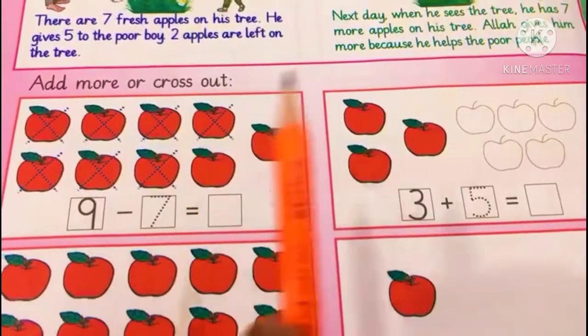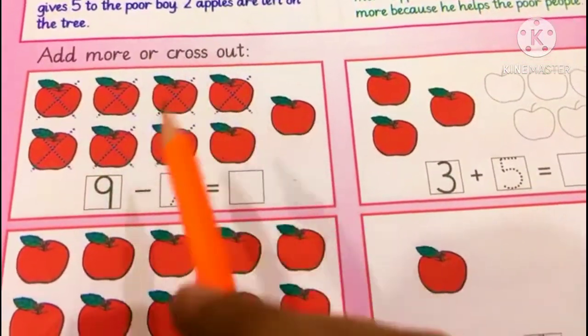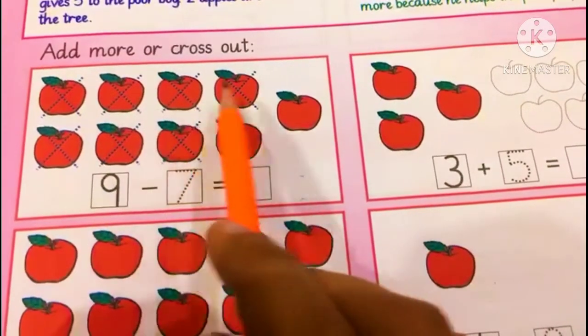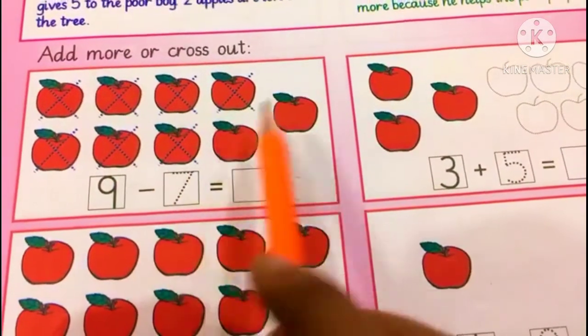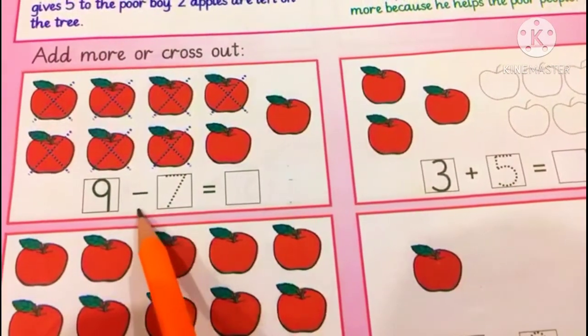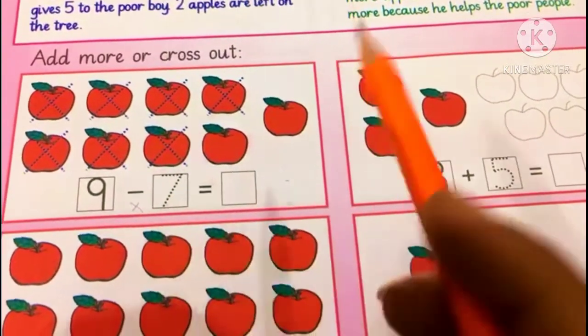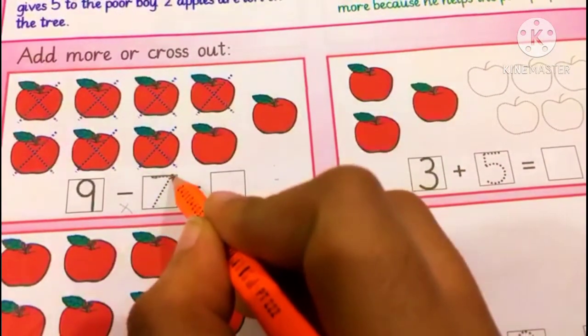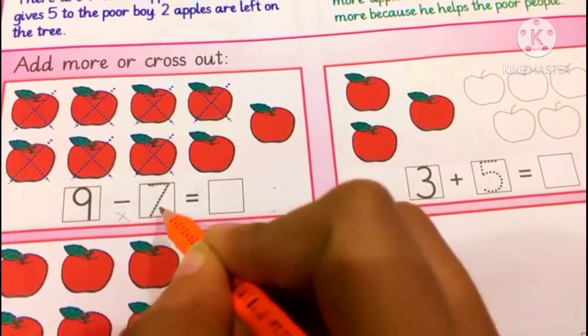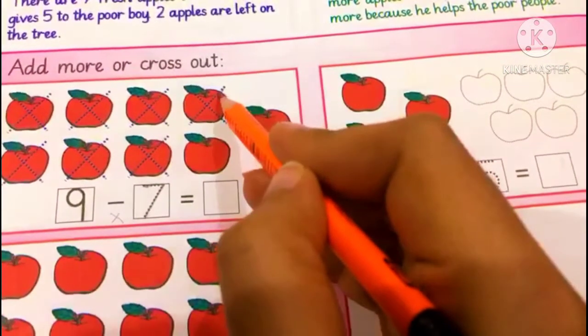How many apples? We will add more and cross out. So 9 apples. 1, 2, 3, 4, 5, 6, 7, 8, 9, total 9. We have to minus means cross 7 apples. So we will cross 7 apples. Write 7 on dots. Then we will cross 7 apples.